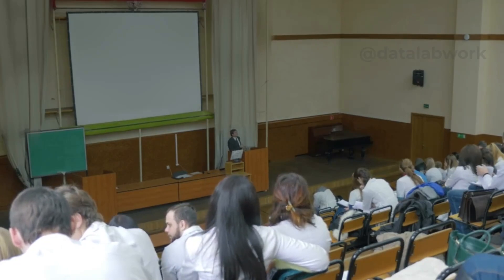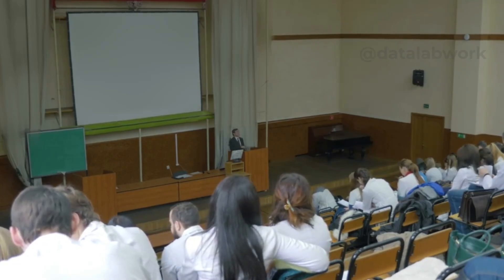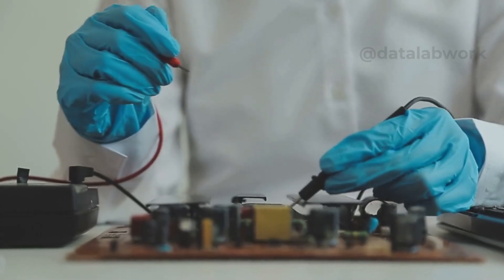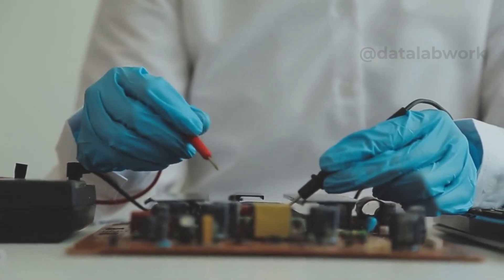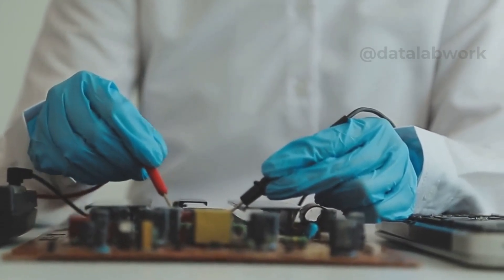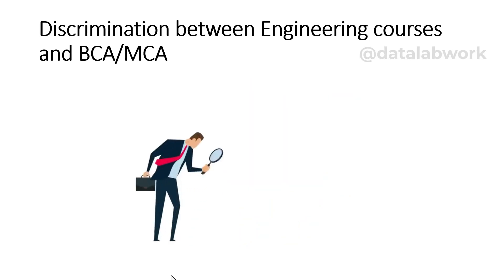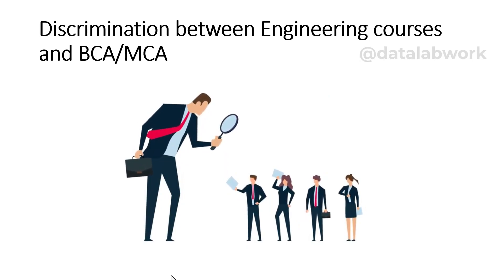Unfortunately, there is a perceived discrimination between engineering courses and BCA or MCA. This bias often originates from the misconception that engineering courses like BTech, BE, MTech, or ME in computer science are more rigorous and comprehensive than BCA or MCA. Some believe engineering courses offer a more in-depth understanding of technical concepts, thus offering better job prospects. However, it's crucial to understand that this discrimination is more often than not unfounded and is gradually evaporating. Both BCA/MCA and engineering courses provide a solid foundation in computer science.